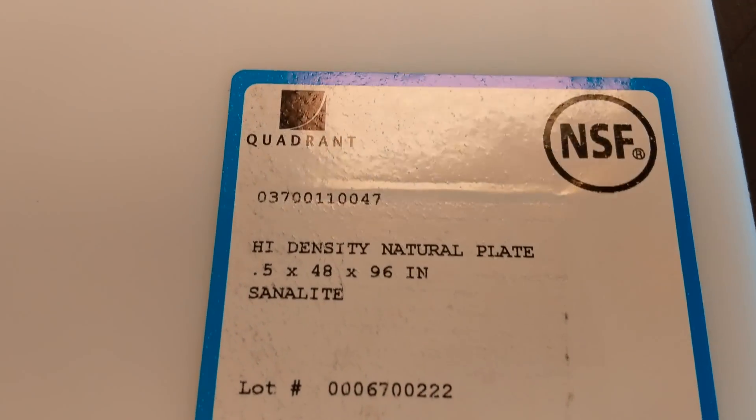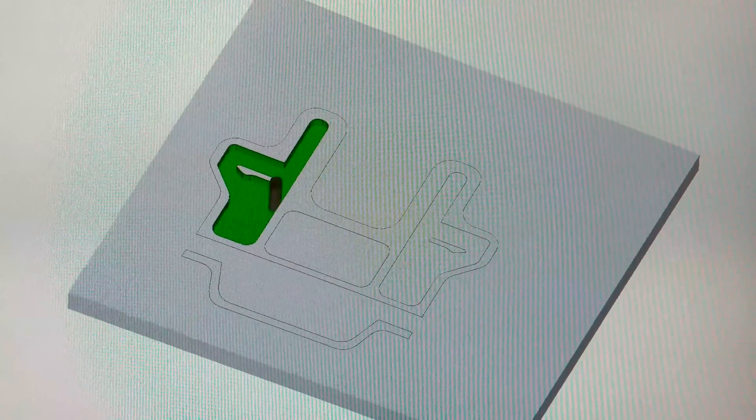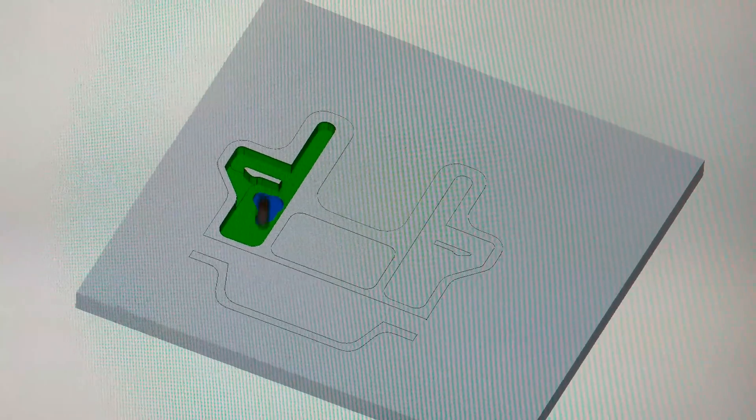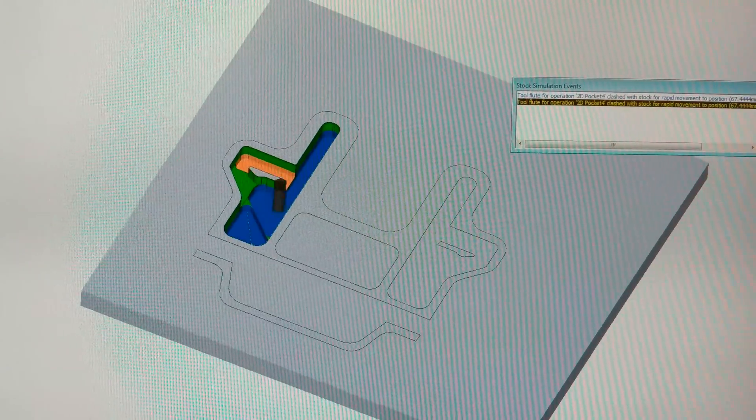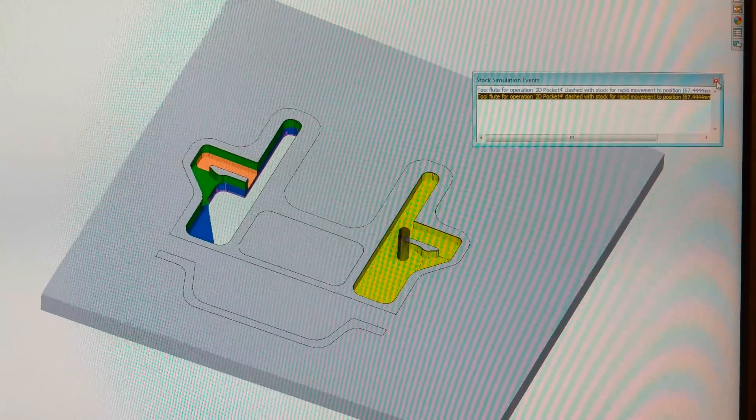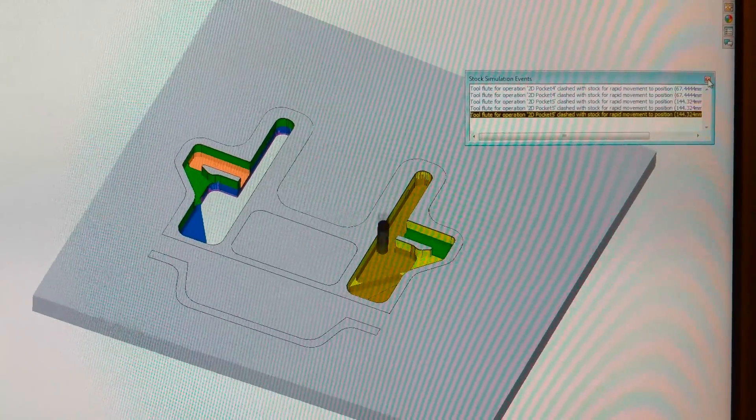This started when I found a sheet of scrap HDPE, which is not as good as UHMW that a lot of robots are made out of, but it was scrap, it was free, and I thought I'd try CNCing a chassis for once, which I had not done before.